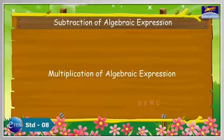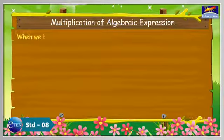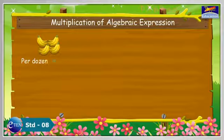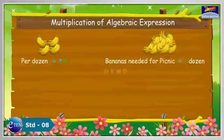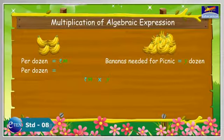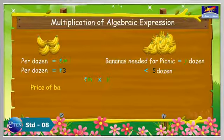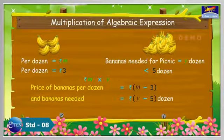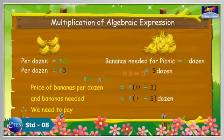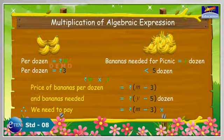Multiplication of algebraic expressions. When we buy things, we multiply. For example, if the price of bananas per dozen is m rupees and the bananas needed for a picnic are y dozens, we have to pay m × y rupees. Now, suppose the price per dozen was less by 3 rupees and the bananas needed were less by 5 dozens, then the price per dozen is (m − 3) rupees and bananas needed is (y − 5) dozens. Therefore, the amount to pay is (m − 3) × (y − 5).